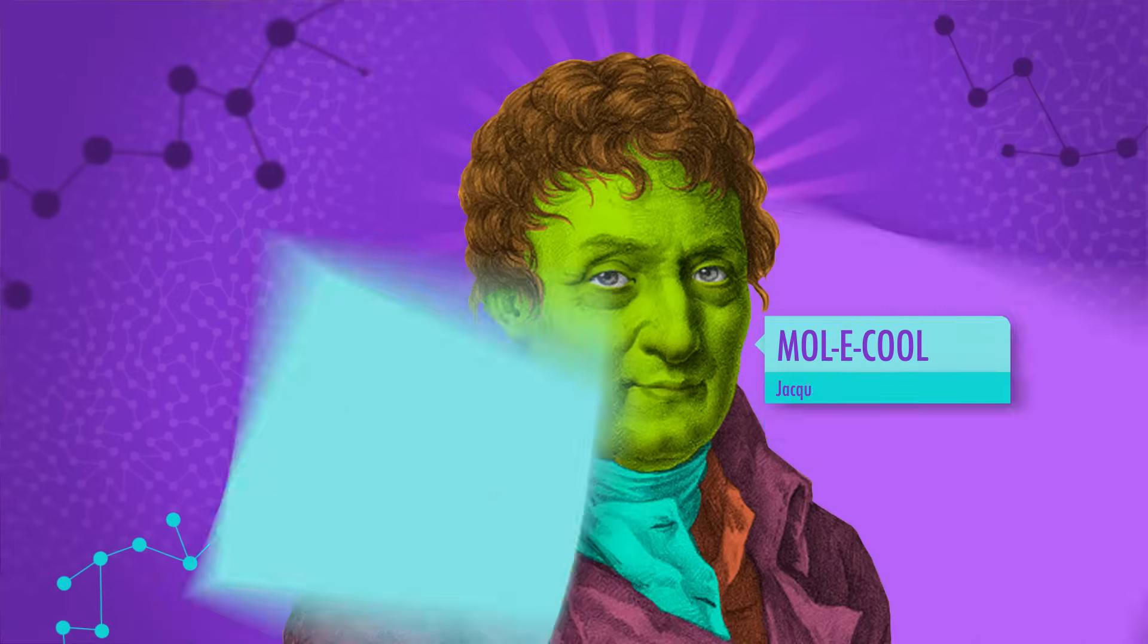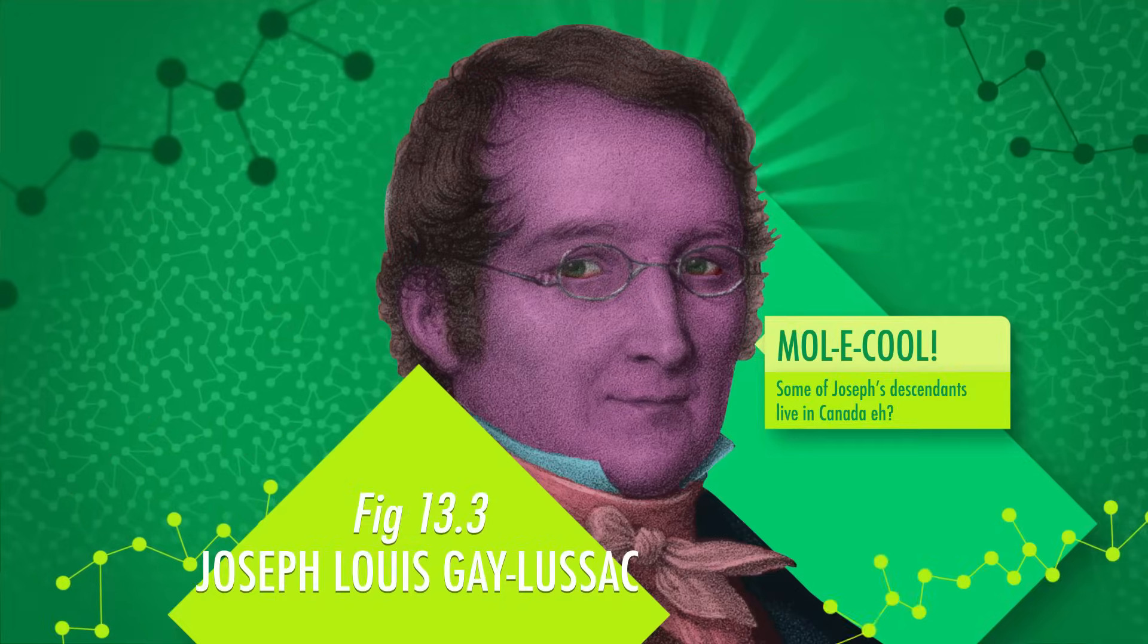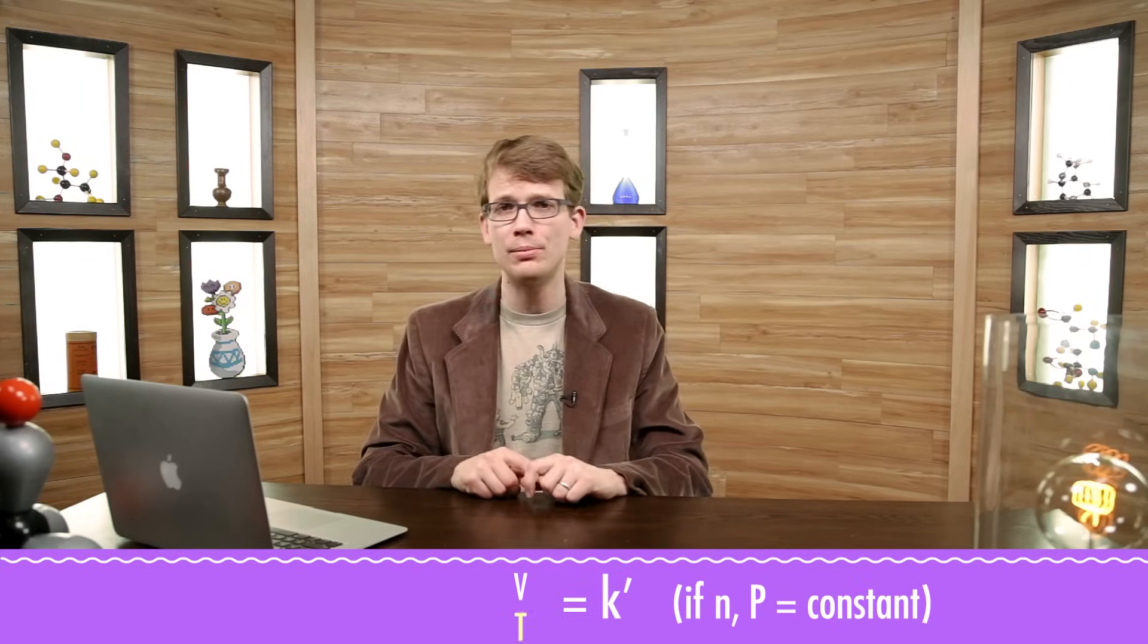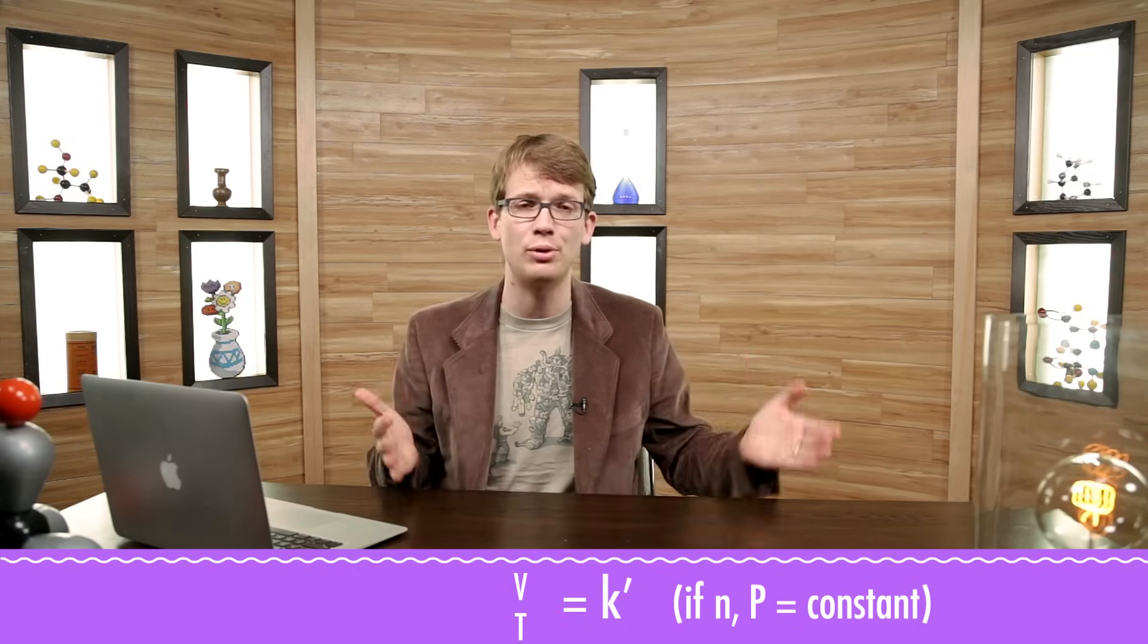Next is Charles' law, which was discovered by Jacques Charles and actually named for him, though it was first published by Joseph-Louis Gay-Lussac, who wasn't a scoundrel. Yes, I'm looking at you, Robert Boyle. Charles' law, which also requires a closed system, states that the volume of a gas divided by its temperature gives a constant as long as the pressure is held steady.